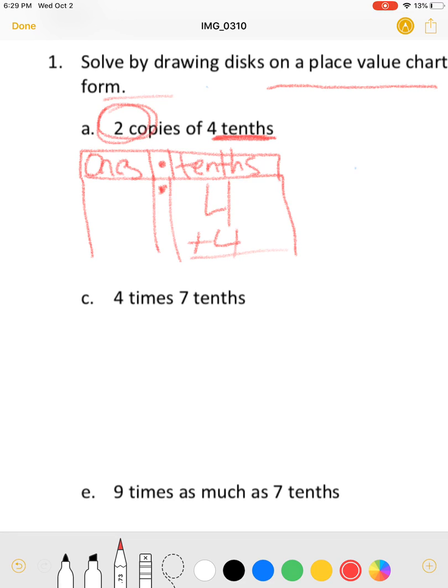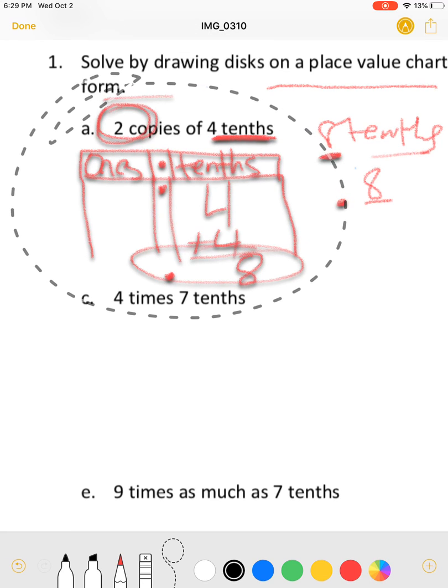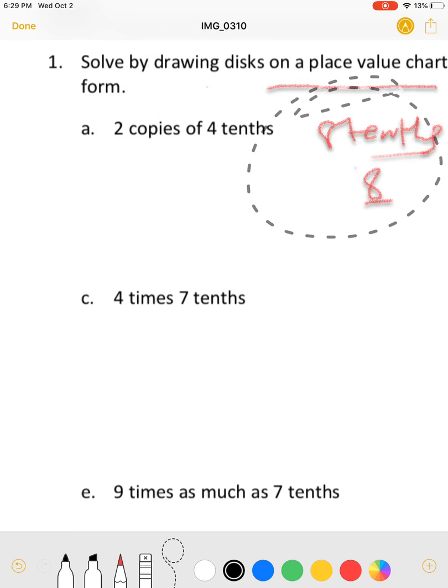We're going to add those together - four plus four equals eight and our answer is eight tenths. Eight tenths or I could have said eight tenths which really means that there's an eight in the tenths place.